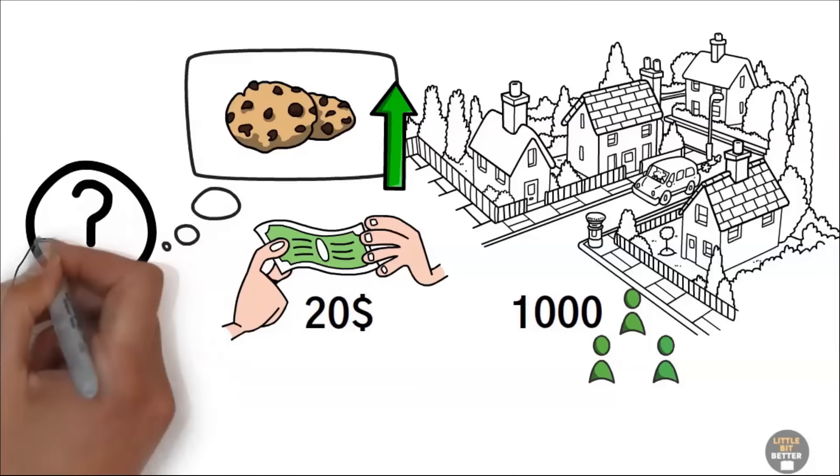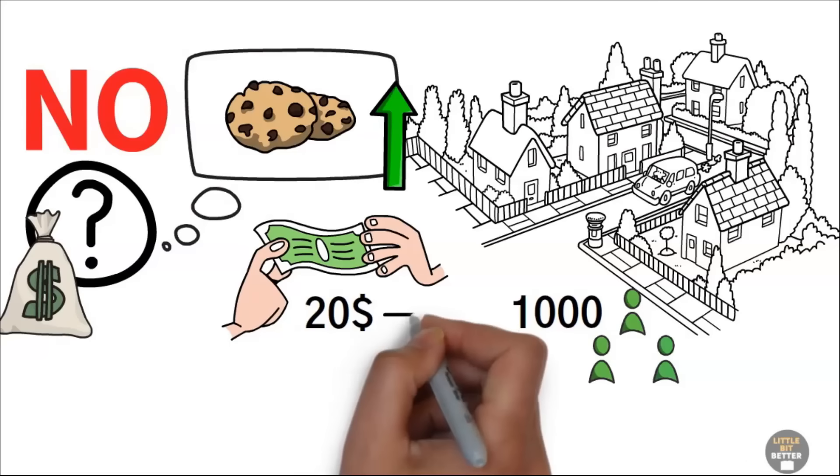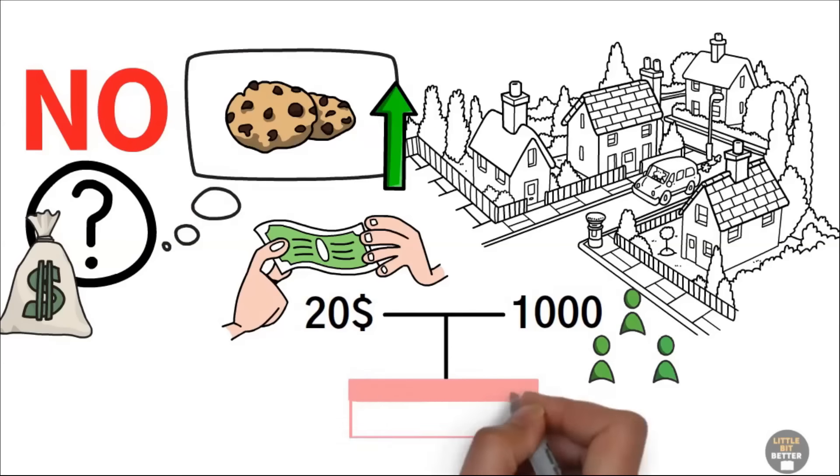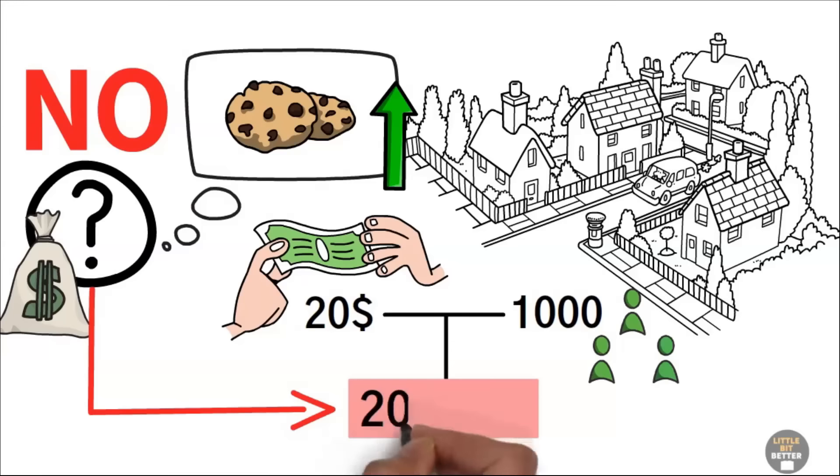Now, is this a million-dollar opportunity? No. Why? Because if you multiply $20, the price of cookies, by 1,000, the number of potential customers, you only get $20,000.